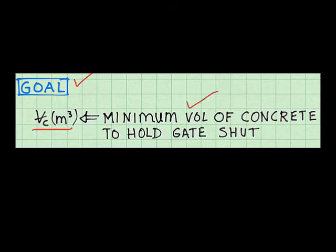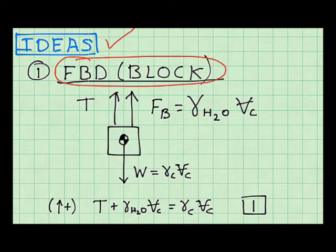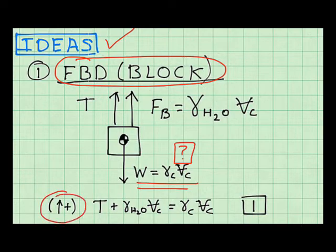To generate ideas for reaching my goals, I started with a free body diagram of the block. The reason was, this free body diagram involves my goal, which is the volume of the concrete block right there. So I wrote force equilibrium in the upward direction. Here's the equation. So my goal appears there. That's known, that's known. And if I can find an equation for the tension in the cable, I can solve this problem.